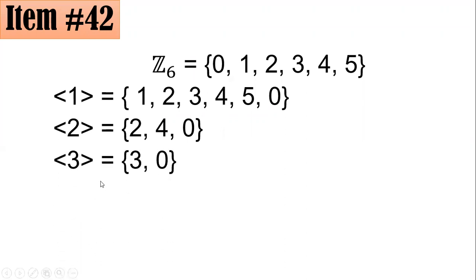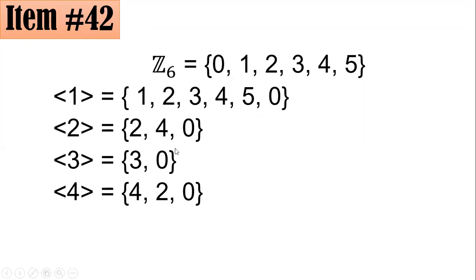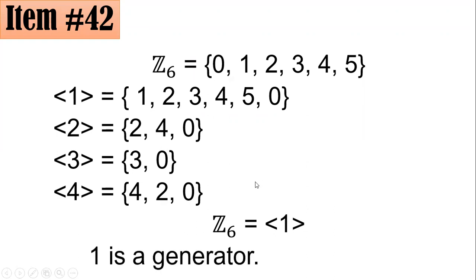For element 4: starting with 4, then 4 plus 4 is 8, and 8 divided by 6 gives remainder 2. Then 2 plus 4 is 6, and 6 divided by 6 gives remainder 0. Only element 1 generates all 6 elements of Z6. Hence, 1 is a generator, and if you went for letter A, great job.